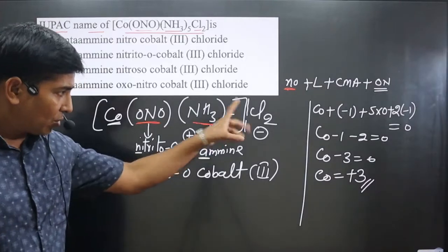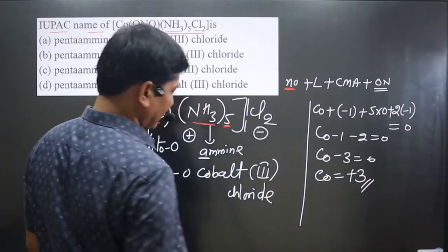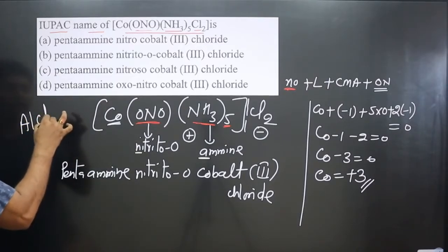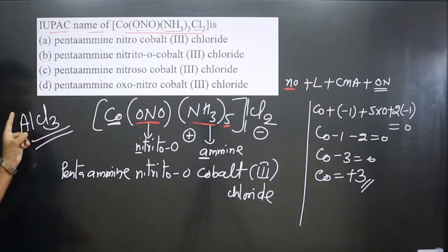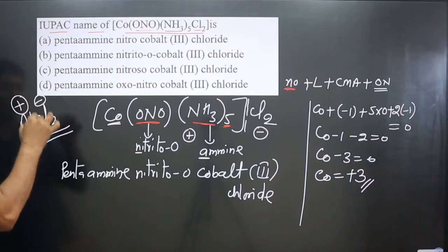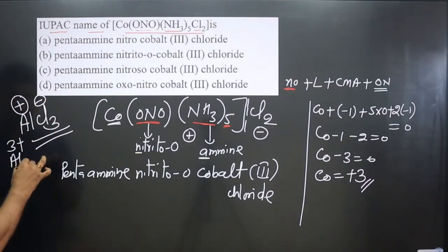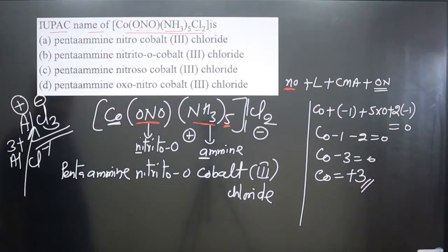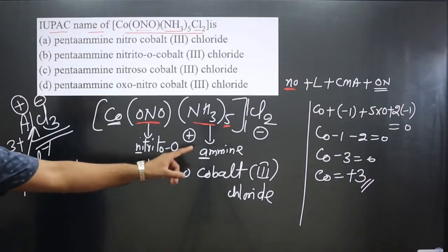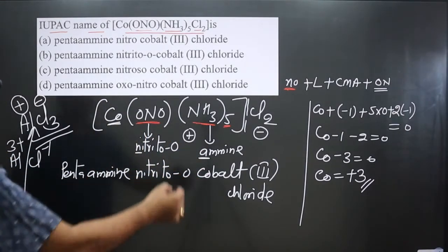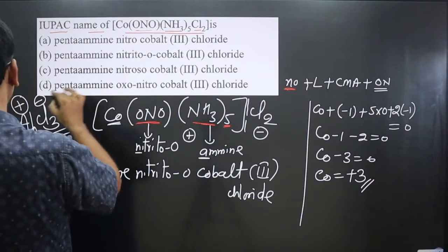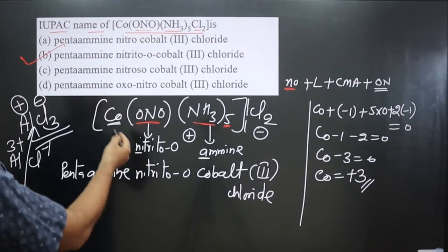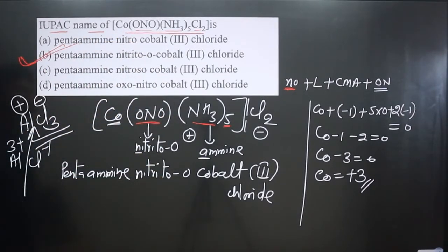For the counter ion, chloride, we use the common name 'chloride' — we do not say 'dichloride'. The two chlorides come from balancing the charge of the cationic and anionic parts, similar to how aluminium chloride is written rather than aluminium trichloride. Therefore the full IUPAC name is: pentaamine nitrito-O cobalt(III) chloride. Looking at the options, only option B shows 'pentaamine nitrito-O cobalt(III) chloride'. So option B is correct.